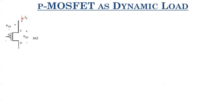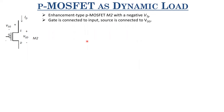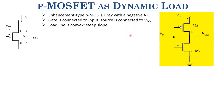Now let us examine the VTC of the CMOS inverter. The PMOS here acts as a dynamic load — unlike a static load biased to a fixed voltage, its resistance depends on the input. That is why it's called dynamic. This PMOS is an enhancement-type P-MOSFET with negative VTP, with gate connected to input and source connected to Vdd. Since the PMOS load line is convex, the CMOS inverter shows a steep slope.